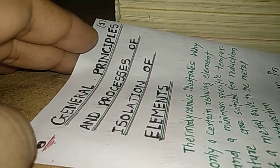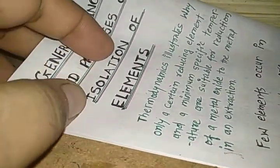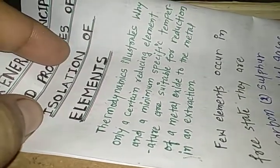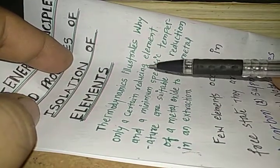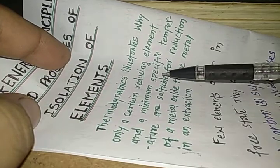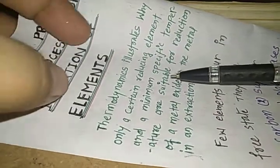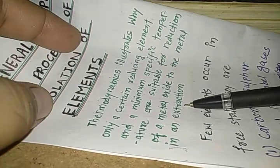The name of the chapter is General Principles and Processes of Isolation of Elements. A quote is written as, let us try to understand the quote some other way. Thermodynamics illustrates why only a certain reducing elements and a minimum specific temperature are suitable for reduction of a metal oxide to the metal in an extraction.